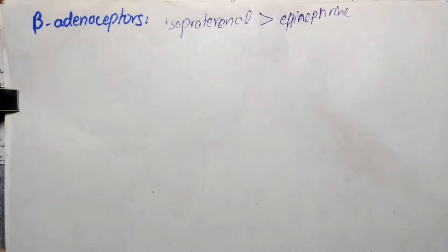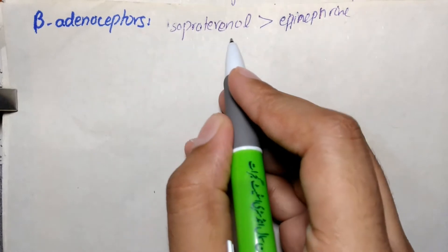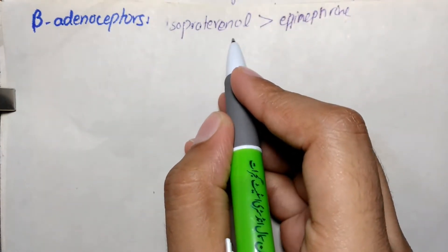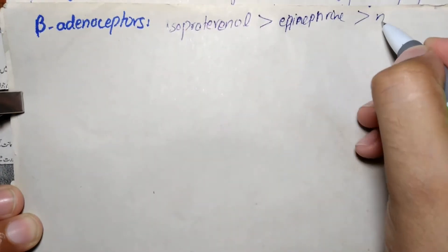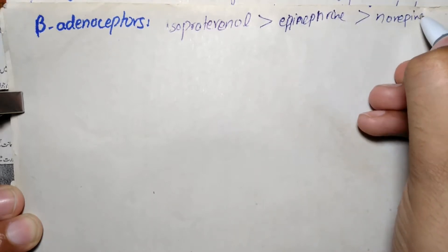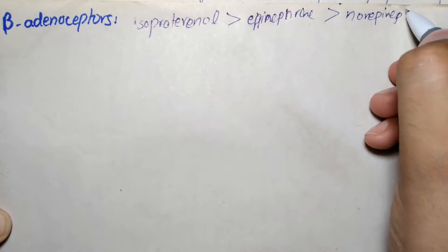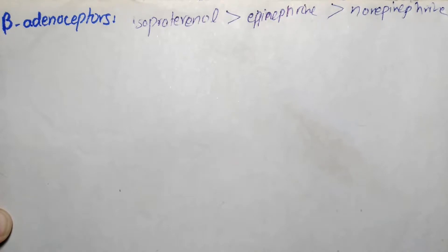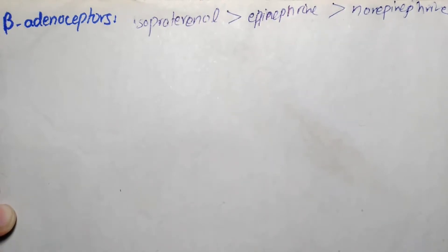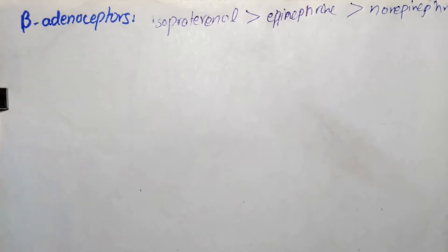Beta adrenoceptors have a different rank order of potency compared to alpha receptors. The agent isoproterenol has greater sensitivity for beta receptors than epinephrine and norepinephrine. So the order of potency for beta adrenoceptors is: isoproterenol > epinephrine > norepinephrine — different from that of alpha receptors.